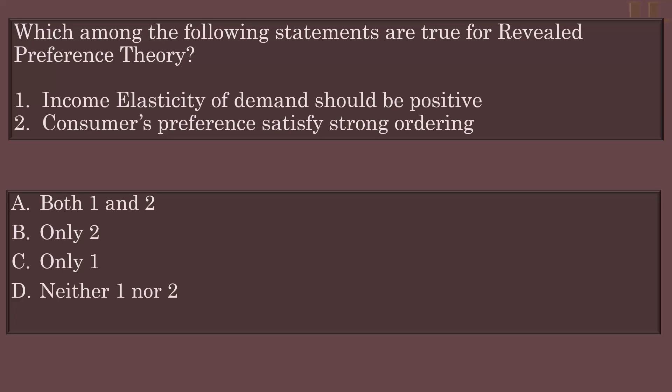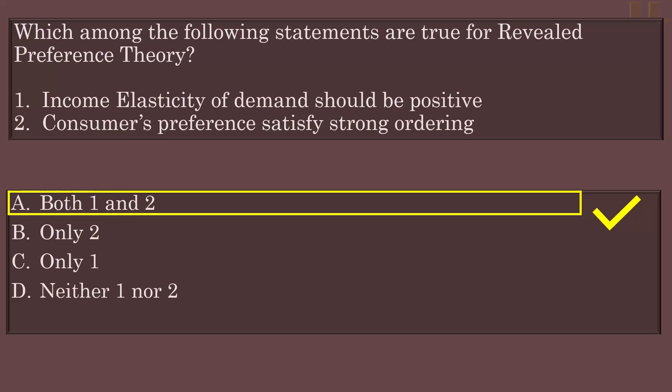Neither 1 nor 2. Here are 2 statements. In which case is revealed preference theory applicable? Revealed preference theory assumes income elasticity of demand is positive — this is an incorrect assumption. Strong ordering assumption method is the correct one. The answer is option A: Both 1 and 2.